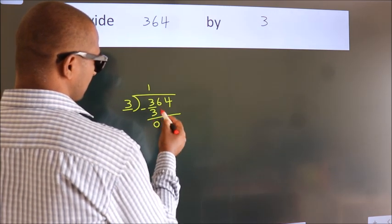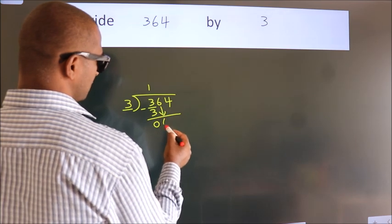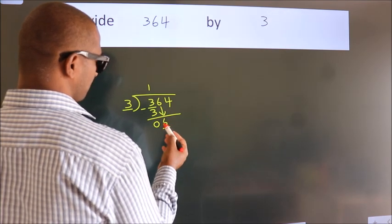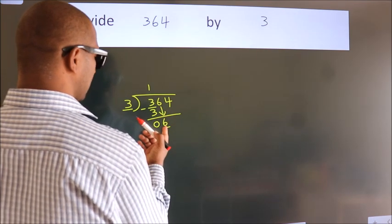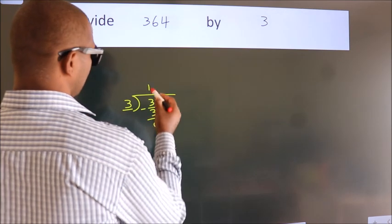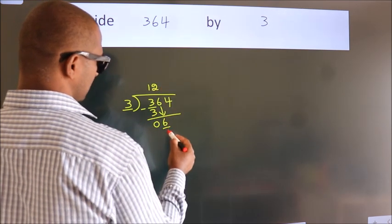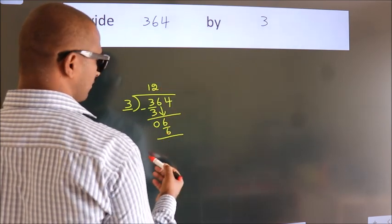After this, bring down the next number. 6 down. When do we get 6? In the 3 table, 3 twos is 6. Now we subtract.